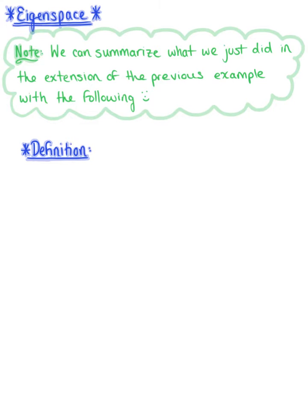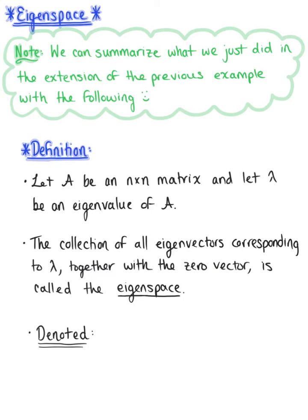So we want to begin by letting matrix A be an n by n matrix, and letting lambda be some eigenvalue of this matrix A. So we can then say that the collection of all eigenvectors corresponding to lambda, together with the zero vector, is called the eigenspace. And we denote this eigenspace as capital E sub lambda.